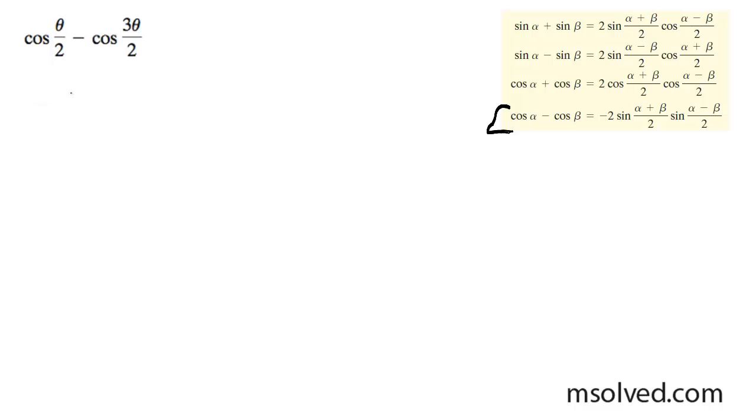So what I'm going to do here is rewrite this as negative 2 sine theta over 2 plus 3 theta over 2 all over 2, and then we have times sine theta over 2 minus 3 theta over 2 all over 2.